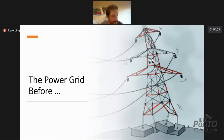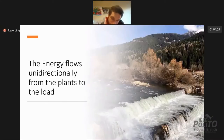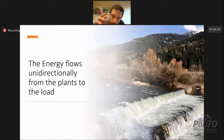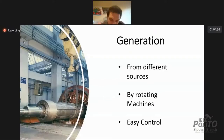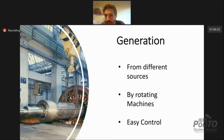Let's start above all to understand what it was and what it is until now. We can imagine the power grid as a river where the water flows from the mountain to the sea. In the same way, in the electrical grid, the energy flows unidirectionally from the generation to the load. The generation can come from different sources: coal, oil, hydro, and nuclear.